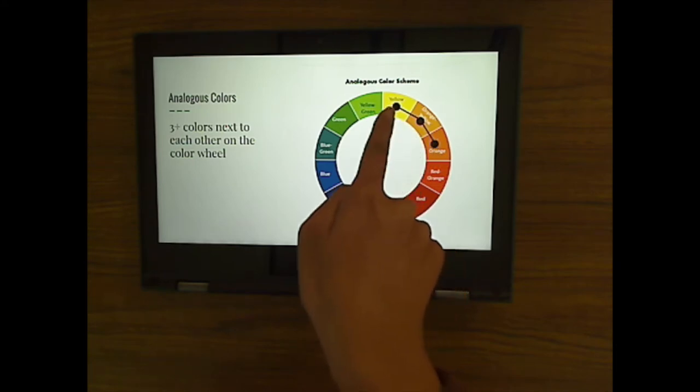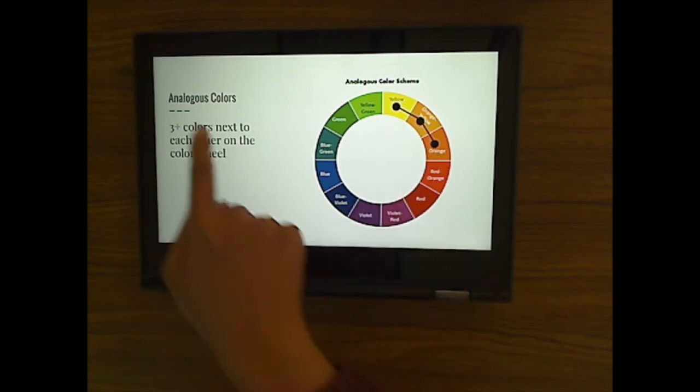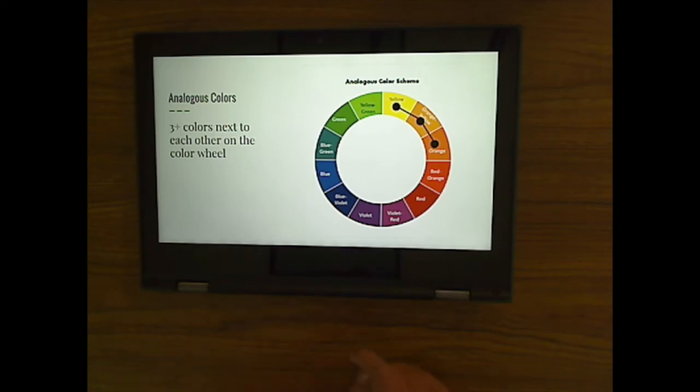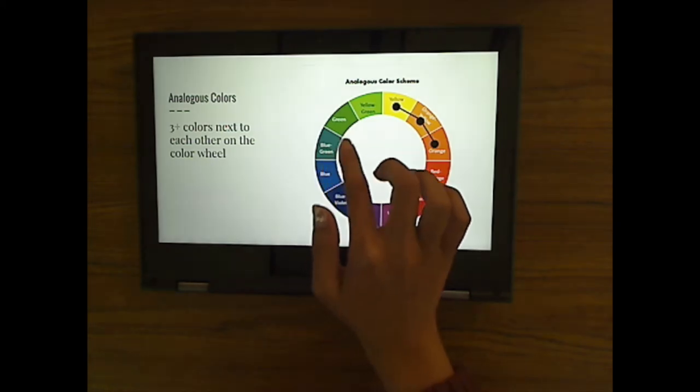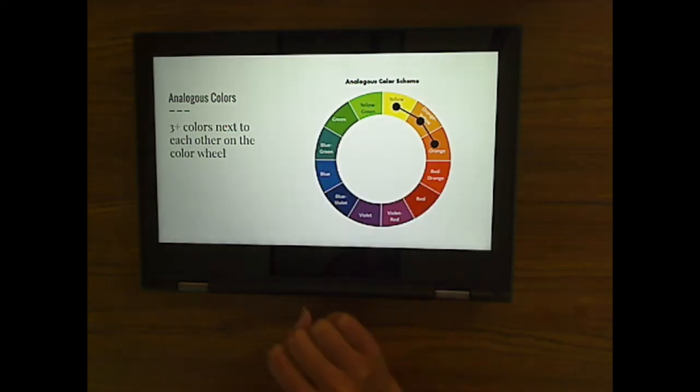For another example, if I point at blue, what could be two colors that are analogous to blue? We have several options really. We can go upwards this way and we can say blue, blue green, and green. We could go the opposite direction and go downwards. We could have blue, blue violet, and violet. Or we can have blue be right in the middle and have blue violet, blue, and blue green.